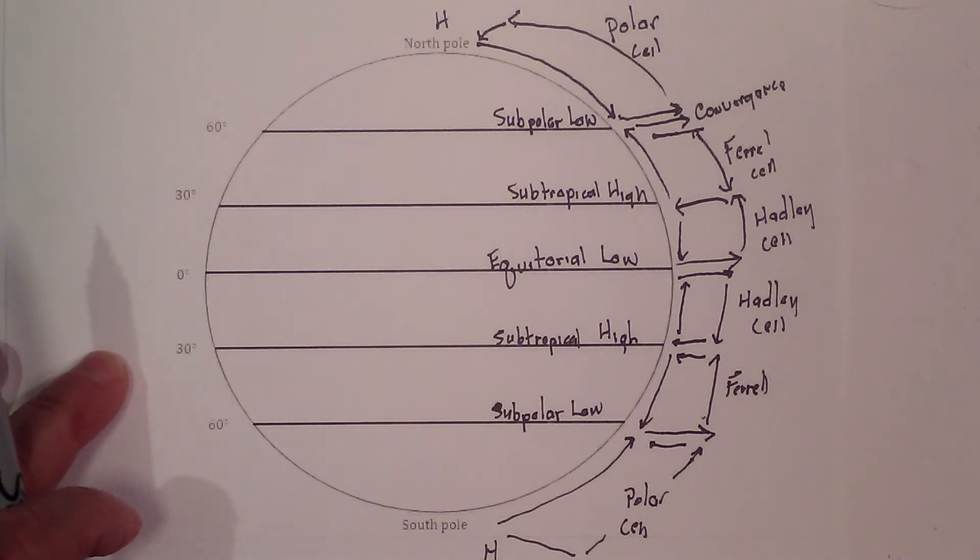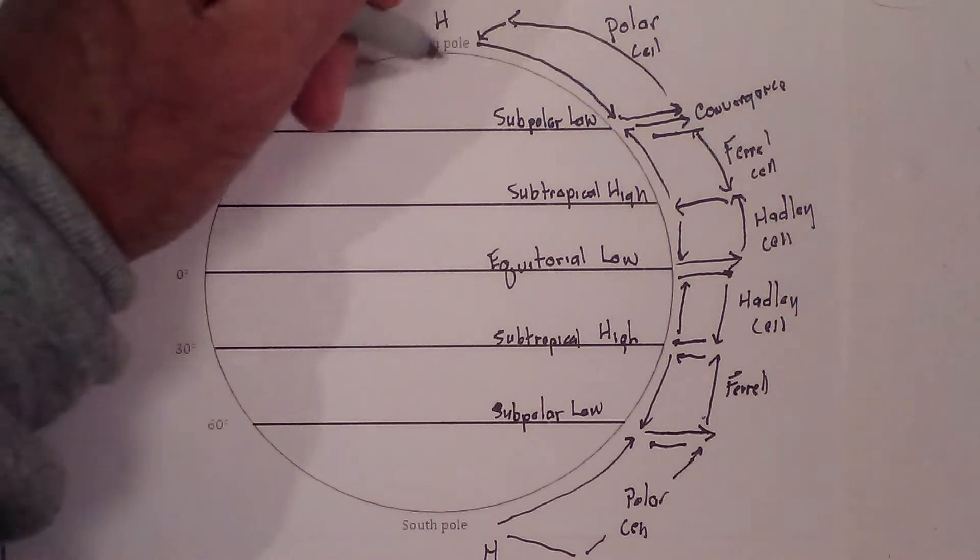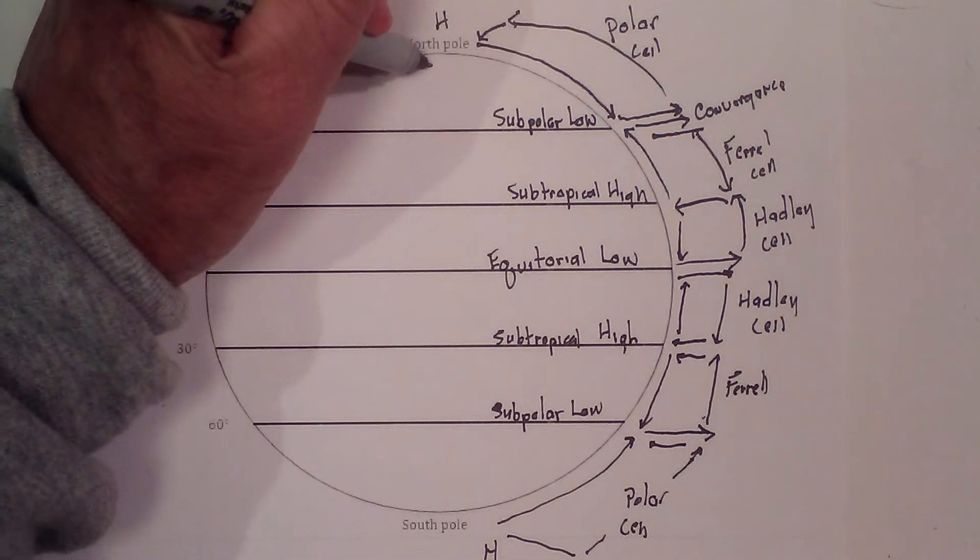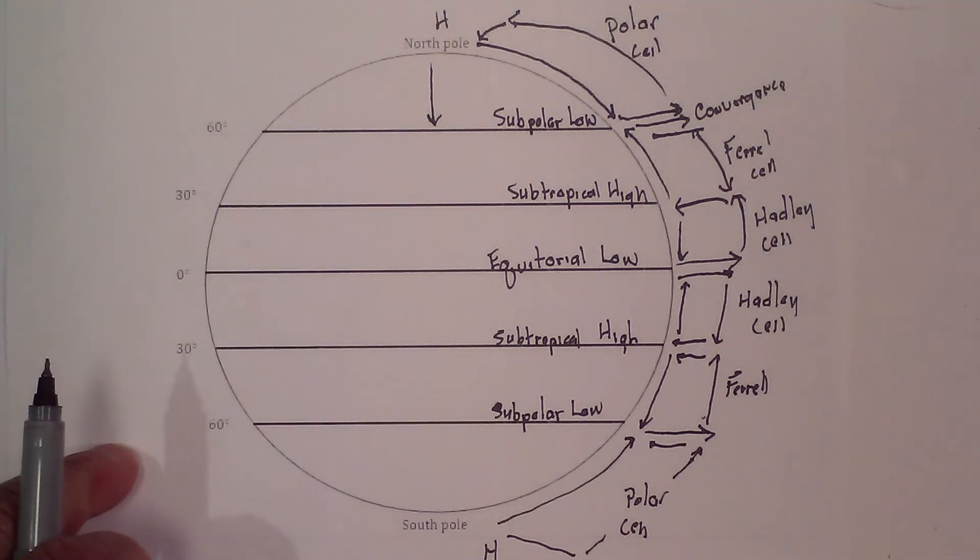Because remember, it's going to flow from high to low. So now the wind begins to flow from high to low, just like this. However, it's going to deflect to the right because of the Coriolis effect.